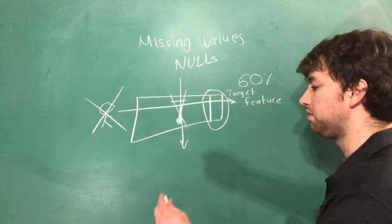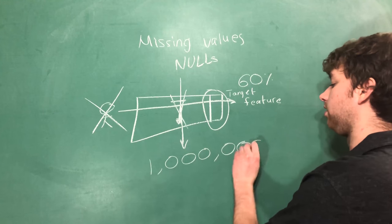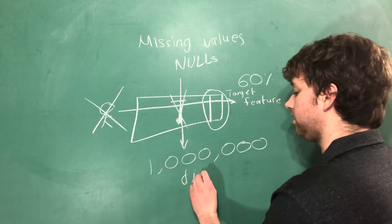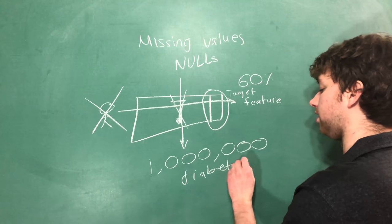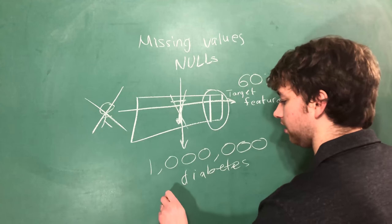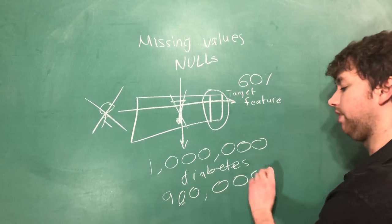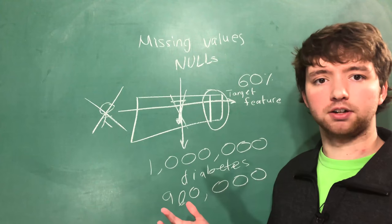It makes really good sense. If we had one million people and we're trying to figure out if someone is likely to have diabetes based on the data of these million people, and we find out that, you know, 900,000 of them, well they died, we don't know if they had diabetes or not.